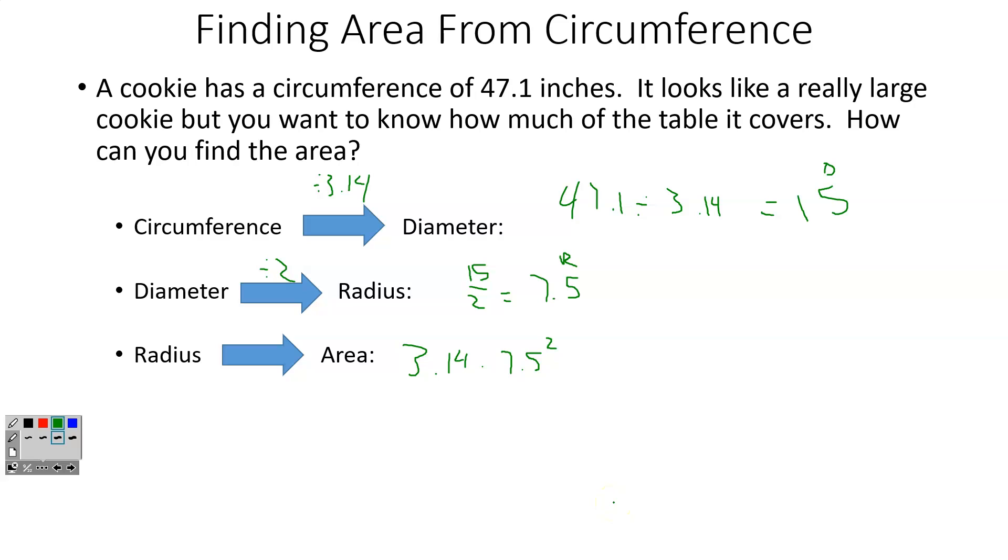I'm going to type that into my calculator now. 3.14 times 7.5 squared. And I get an answer of 176.625, which is squared.